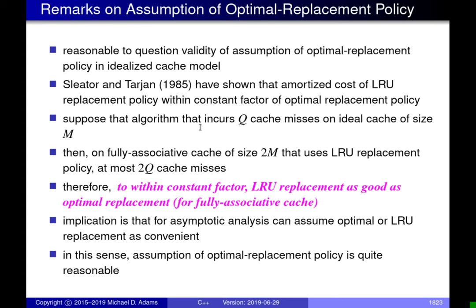If you have an algorithm that incurs Q cache misses on an ideal cache of size M, then on a fully associative cache of size 2M — in other words twice the size — that employs the least recently used replacement policy, at most 2Q cache misses are obtained. The main result is that within a constant factor, least recently used replacement is as good as optimal replacement, as long as the cache is fully associative. So if we're doing asymptotic analysis, since it doesn't care about constant factors, it's quite justified to assume a cache with an optimal replacement policy.